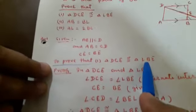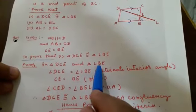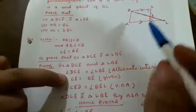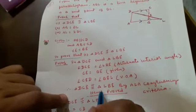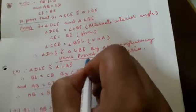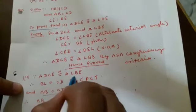Proof for Part 1 — triangle DCE congruent to triangle LBE. In triangle DCE and triangle LBE: angle DCE is equal to angle LBE by alternate interior angles because these two sides are parallel; CE is equal to BE as already given; and angle CED is equal to angle BEL by vertically opposite angles. Therefore triangle DCE is congruent to triangle LBE by ASA congruency criteria. Part 1 proved.